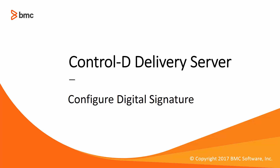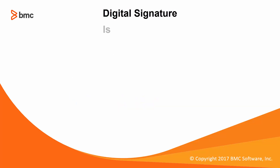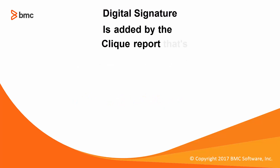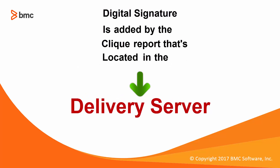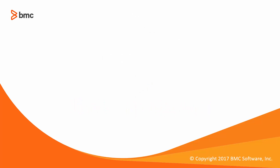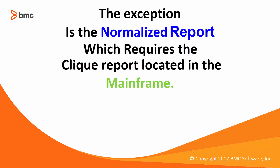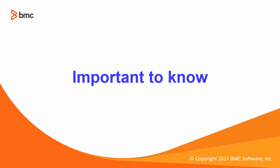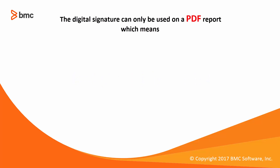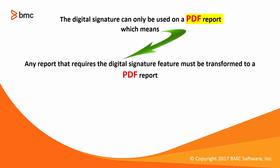In all cases except one, the digital signature is added by the click report located in the delivery server application. The exception is the normalized report, which requires the click report located in the mainframe. It is important to know that the digital signature can only be used on PDF reports, which means that any report that requires the digital signature feature must be transformed to PDF.